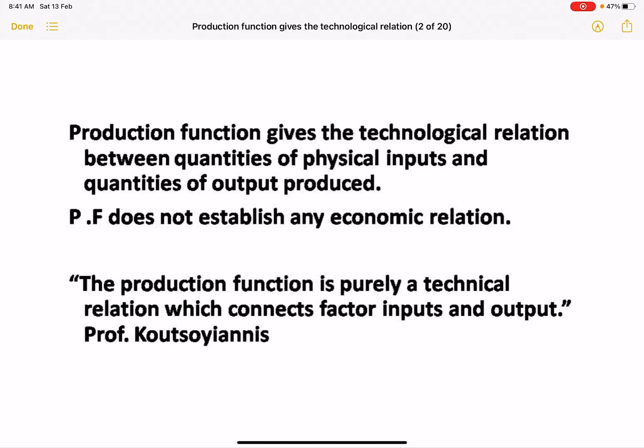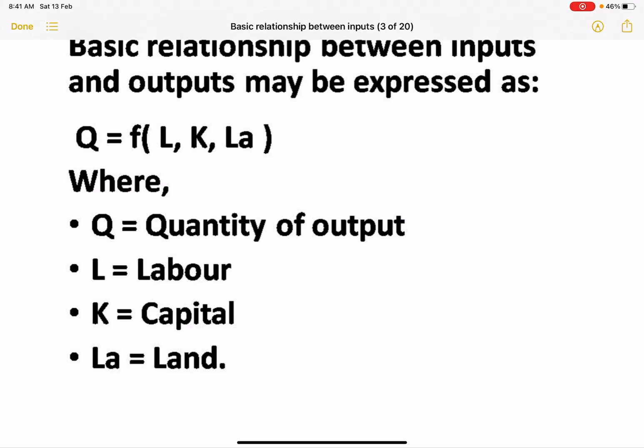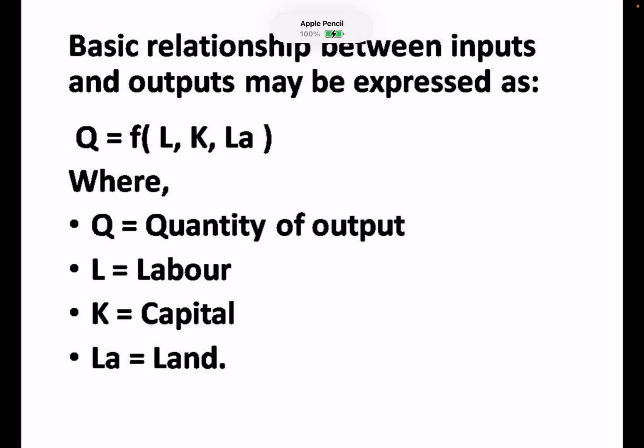Production function is exactly a technological relation which exists between the quantity of physical input and quantity of output produced. Production function does not establish an economic relation; it is purely a technical relation which connects factor input and output. This definition was given by Professor Kutsanas. Production function is basically a relationship between input and output, which we can express as Q = f(L, K, La).